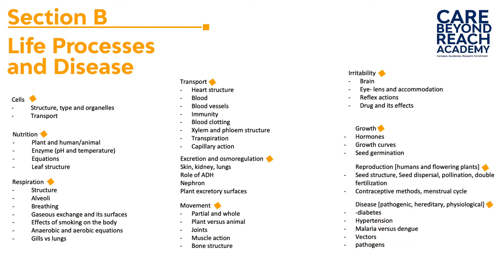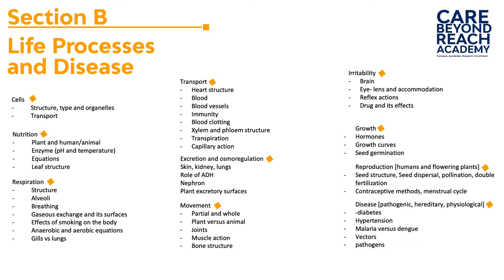After excretion we move on to movement and locomotion — movement in plants and animals. We look at partial movement and whole-body movement, the structure of bones, the skeletal system, and how different joints allow different kinds of movement. We also look at how muscles work, such as the biceps and triceps. After movement we look at irritability, which covers responses to the environment — reflex actions, the brain, the eye, the pupil, and how drugs impact irritability.